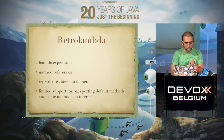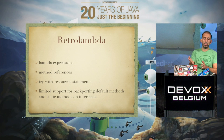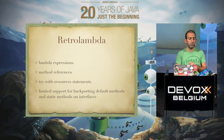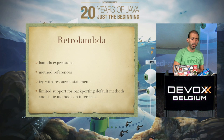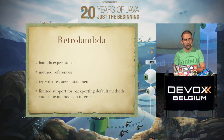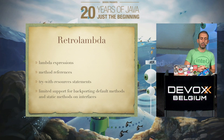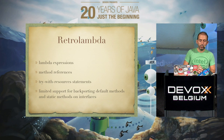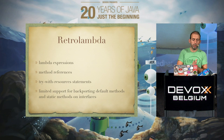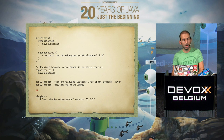So what can we do to solve this problem? I came across a project called RetroLambda, which brings Lambdas to Android. First you need to install Java 8, because it will use Java 8 to make Lambdas work. It supports Lambda expressions, method references, and try-with-resources statements. It offers limited support for backporting default methods and static methods on interfaces. This is limited support, so not everything works, but even just for Lambdas it's worth a try.